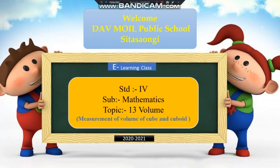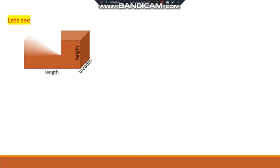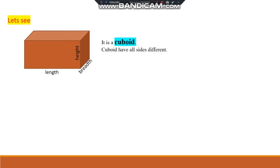In this topic, in this video, we have to use the formulas for finding the cube and cuboid. This picture — you know the name of this picture is cuboid. It is a cuboid, and the condition for cuboid is that length, breadth, and height are different. That means a cuboid has all sides different, and to find the volume of a cuboid we use the formula: Volume of cuboid = length × breadth × height.